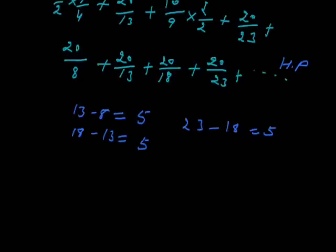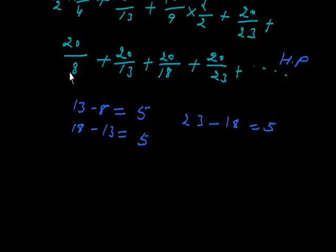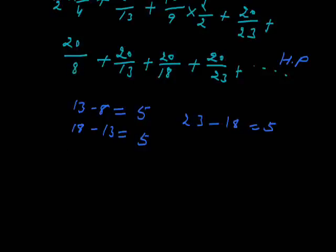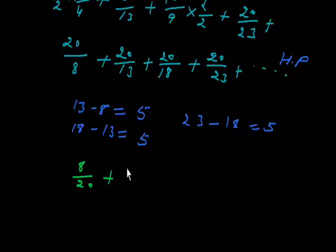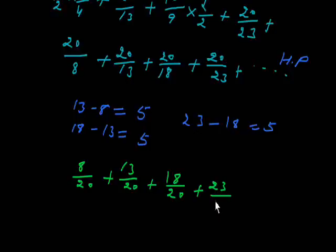Now I will just invert these numbers, because when I invert them it becomes arithmetic progression: 8/20, 13/20, 18/20, 23/20. This is arithmetic progression, where the difference of the above numbers will be equal.